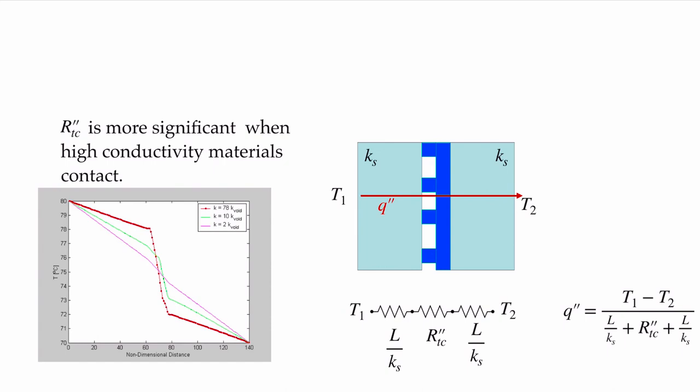The contact resistance is far more significant when high conductivity materials contact. So if you can imagine that I'm taking two pieces of copper here with a conductivity of approximately 400 watts per meter Kelvin, and I'm putting these two pieces of copper together, I'm going to see a significant temperature drop between them, because the fill gas on that micro roughness is going to be the conductivity of air, which is many orders of magnitude smaller than the conductivity of copper. If these two pieces instead were insulation, I wouldn't be concerned at all about the contact resistance, because the conductivity of this void would be similar to the insulation, and I'd have something that's closer to the purple line.